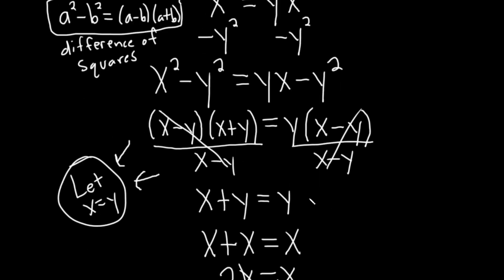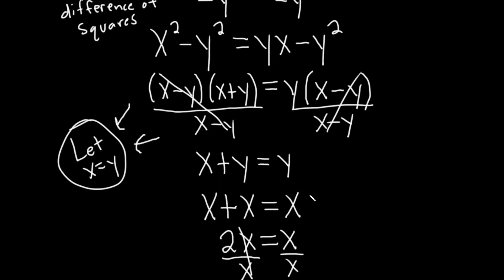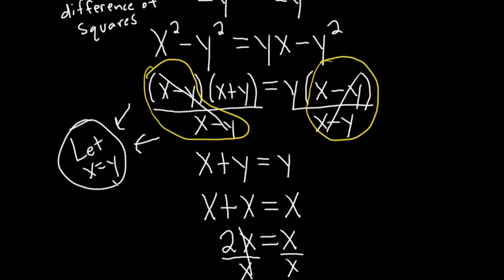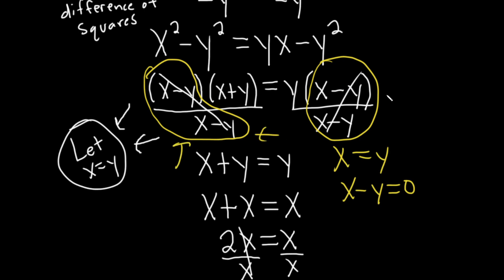So where is the mistake? The mistake is right here — I'm going to circle it. And it's because x is equal to y, which means x minus y is actually equal to zero. So we're actually dividing by zero here, which is super bad. You're not allowed to divide by zero in mathematics — it's undefined. So that's the mistake: division by zero.